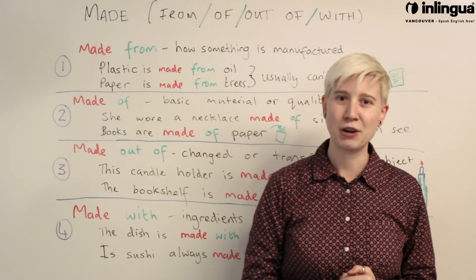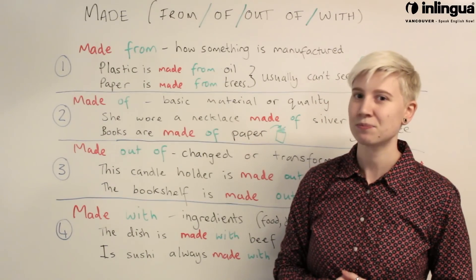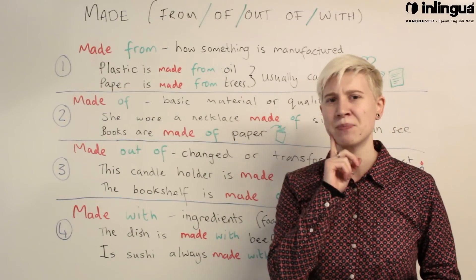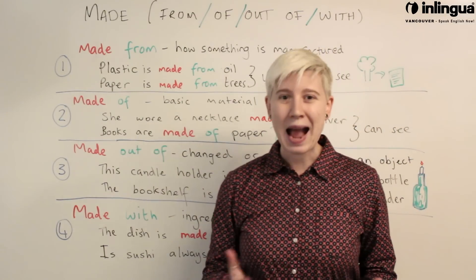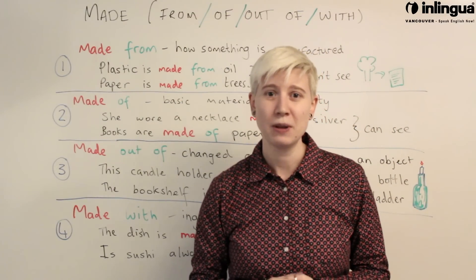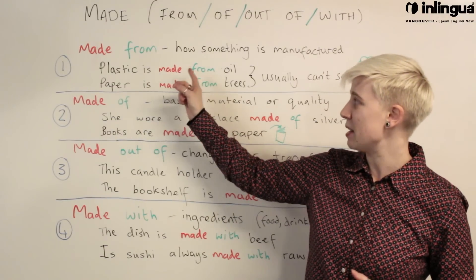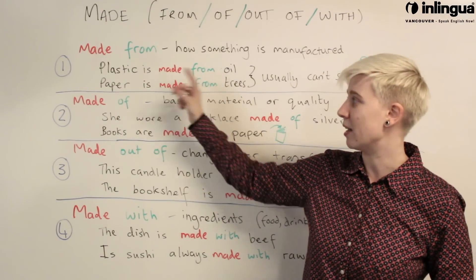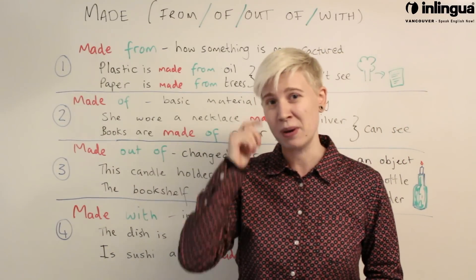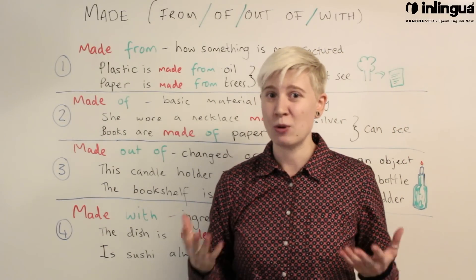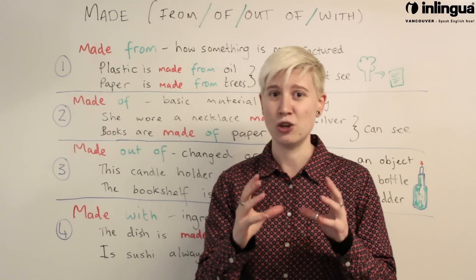Let's have a look at the first one in more depth: 'made from'. When do we use 'made from'? We use 'made from' when we are talking about how something is manufactured. I have two example sentences: 'Plastic is made from oil' and 'Paper is made from trees'. One good thing to remember for 'made from' is that we usually cannot see the original thing that has been made into the new material.